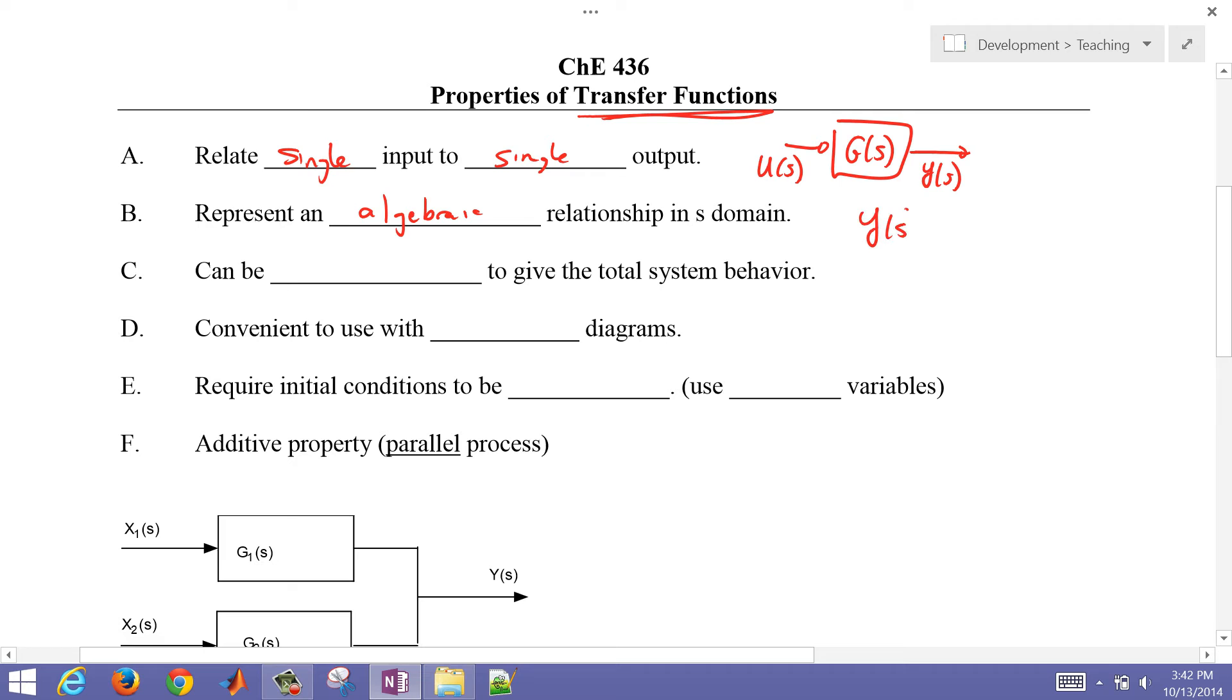So a transfer function can also be written as y of s over u of s equals g of s. So if we have a particular u of s, that would just be multiplied over, and then y of s equals g of s times u of s. This is what that represents in terms of an algebraic expression.